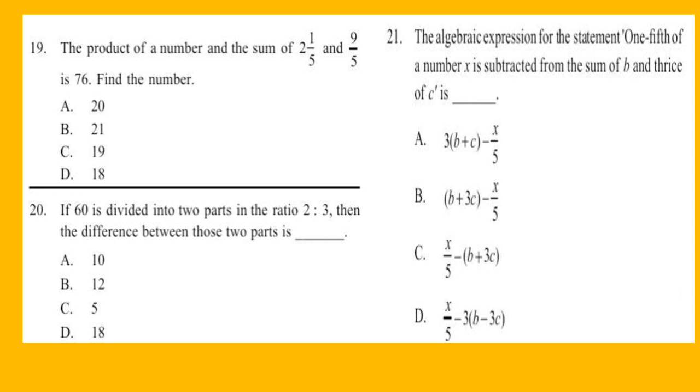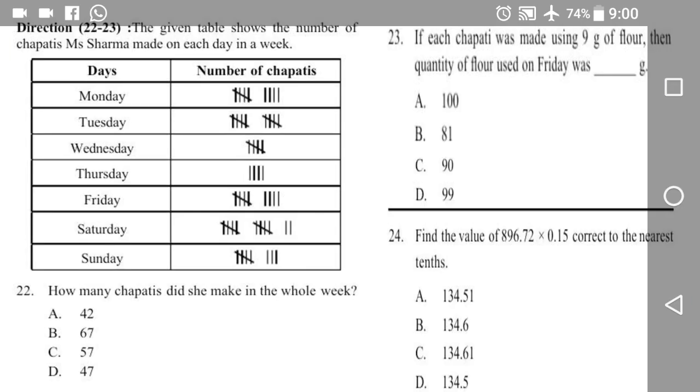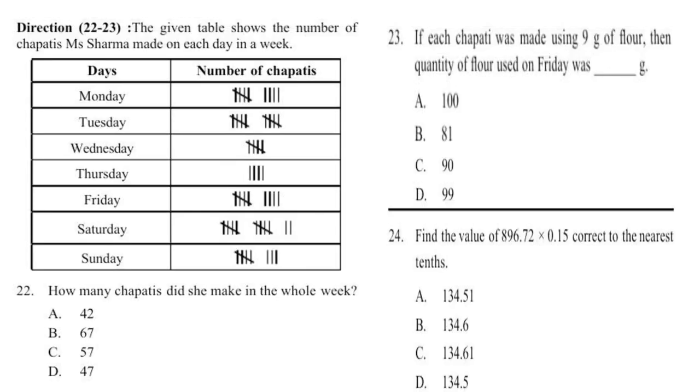Question 21: The algebraic expression for the statement 'one-fifth of a number x is subtracted from the sum of b and thrice of c' is blank. Directions for questions 22 to 23: The given table shows the number of chapatis Mrs. Sharma made on each day in a week. Question 22: How many chapatis did she make in the whole week? Question 23: If each chapati was made using 9 grams of flour, then the quantity of flour used on Friday was blank grams.